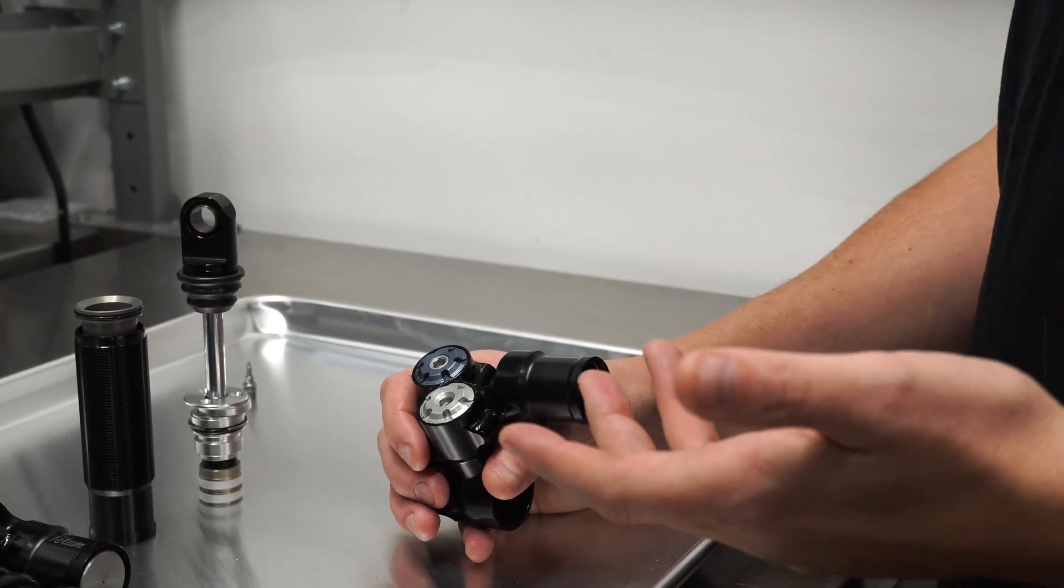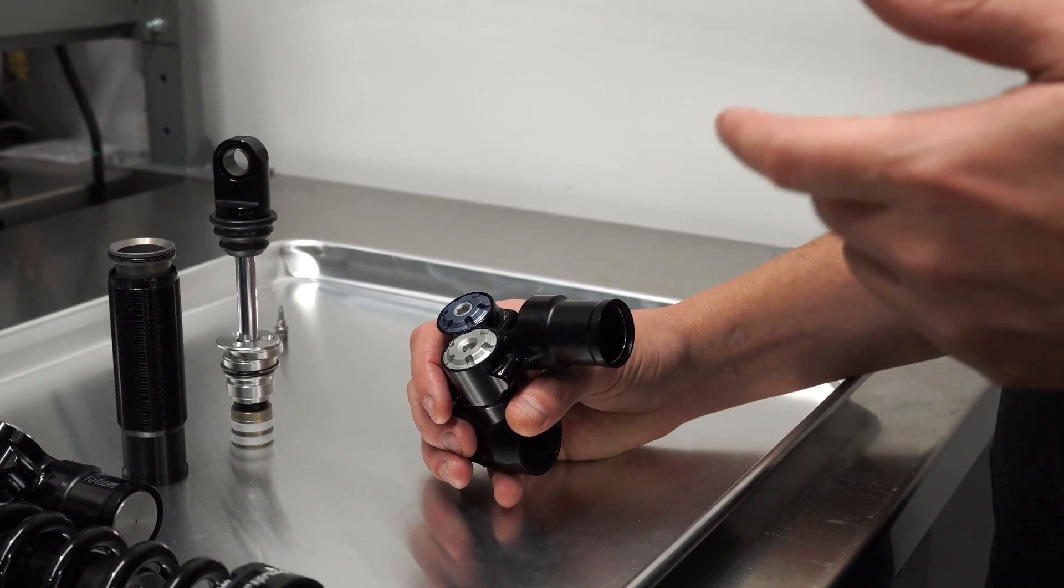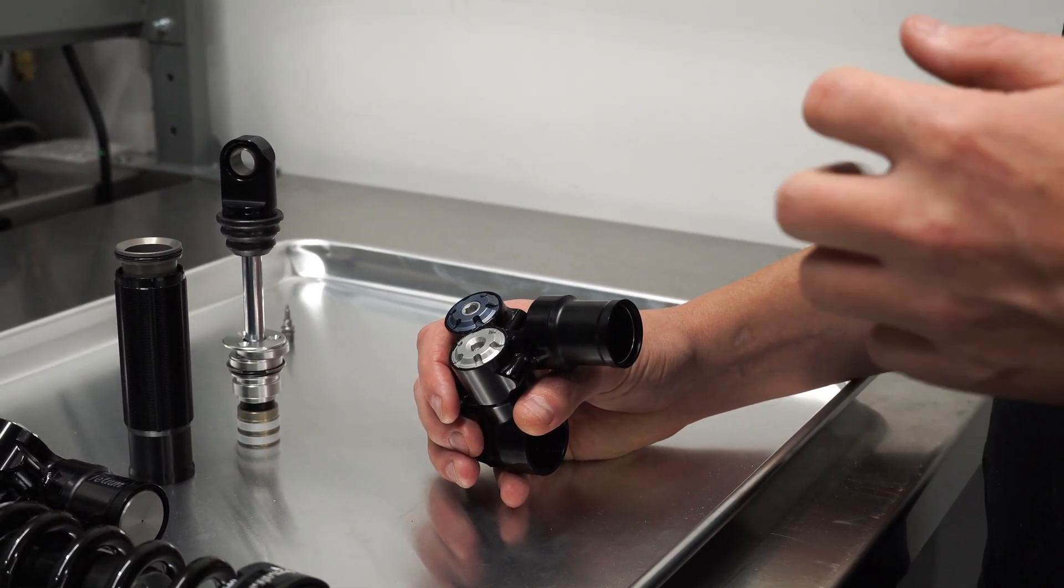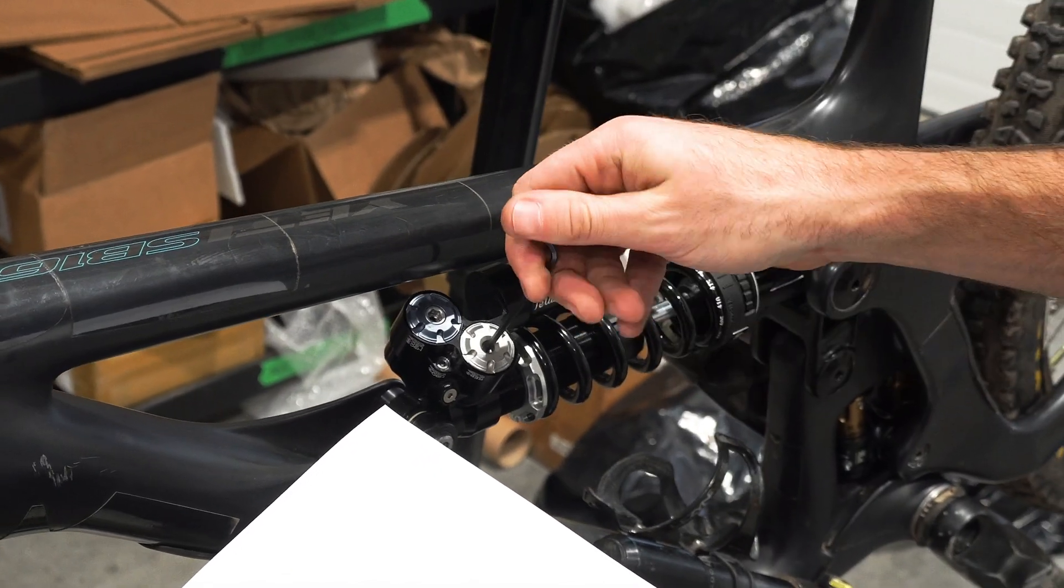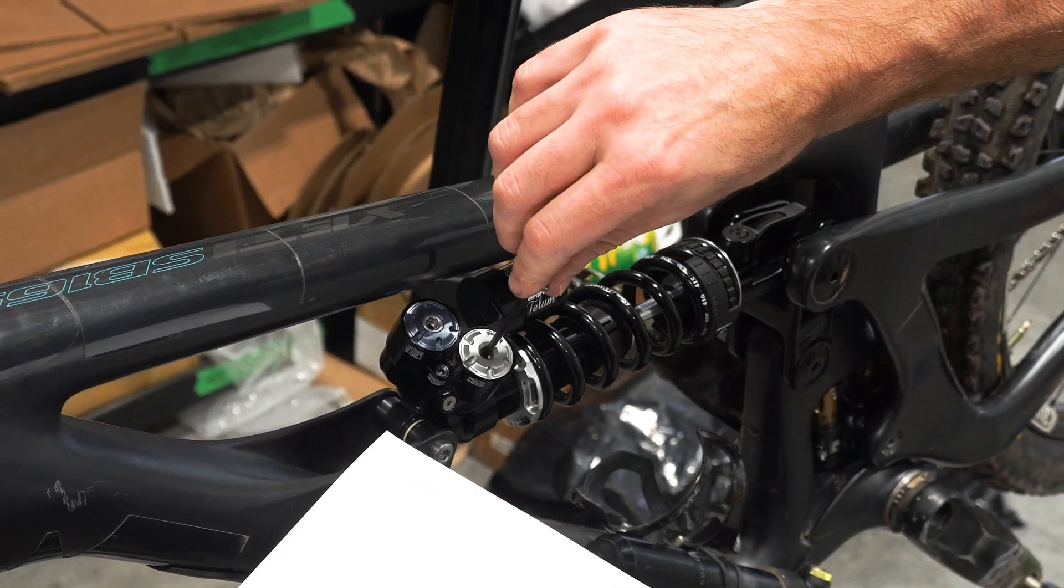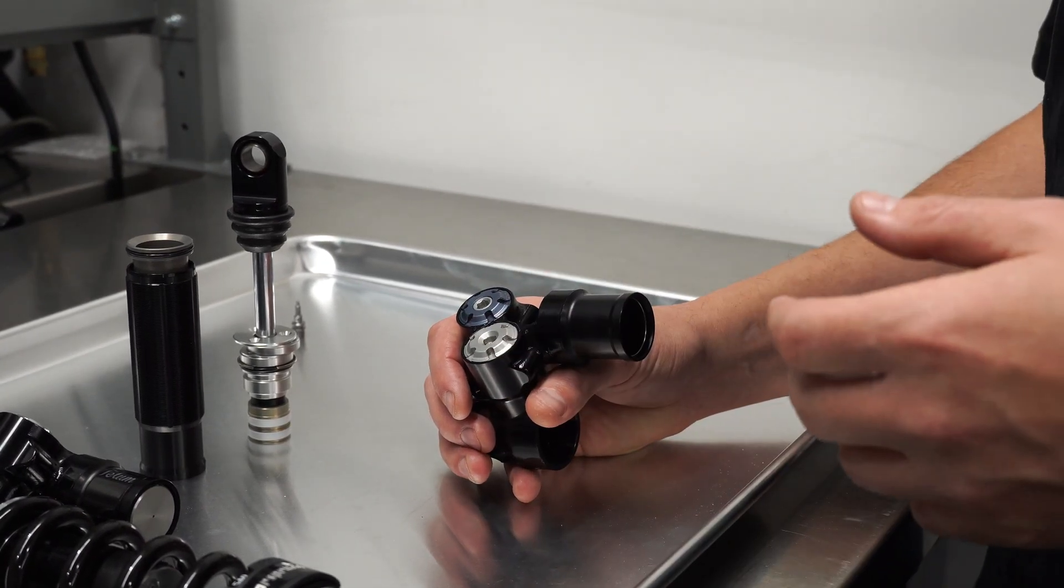So, third, over a decade of setting up and tuning suspension of all brands for hundreds if not thousands of riders has taught us that very, very few people have a good grasp of how to set up high and low speed rebound adjustments. It has been historically one of the most common questions we get. How do I set up my high-speed and low-speed rebound?